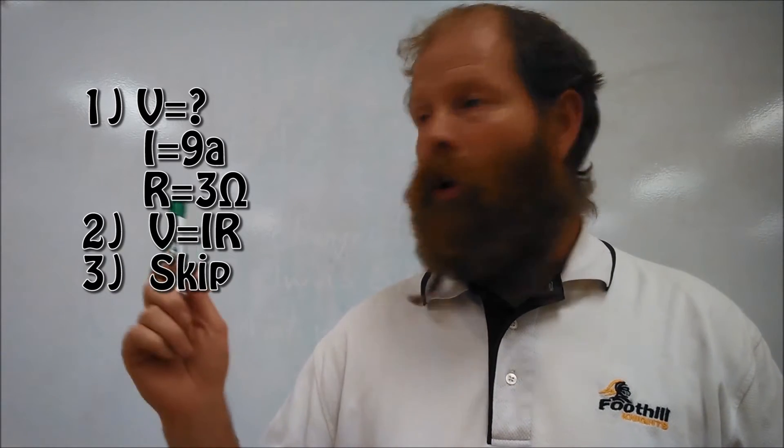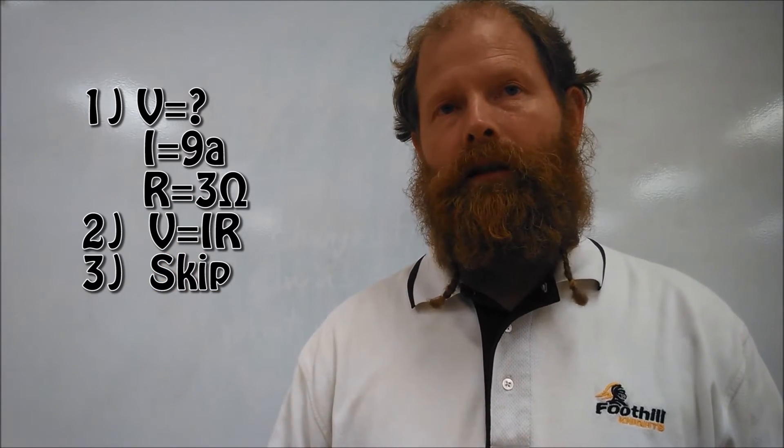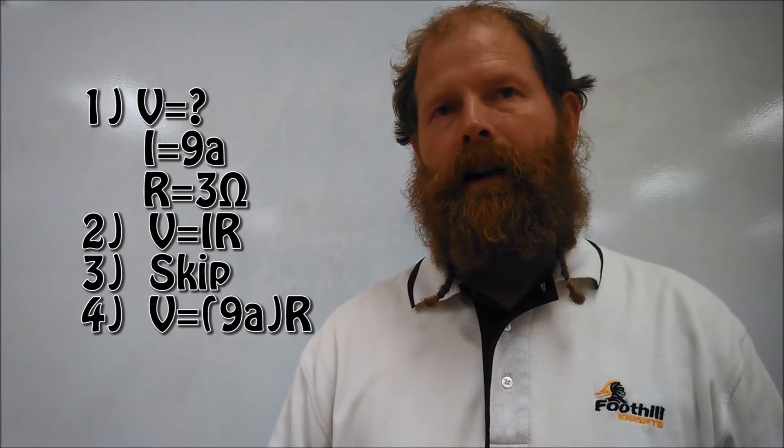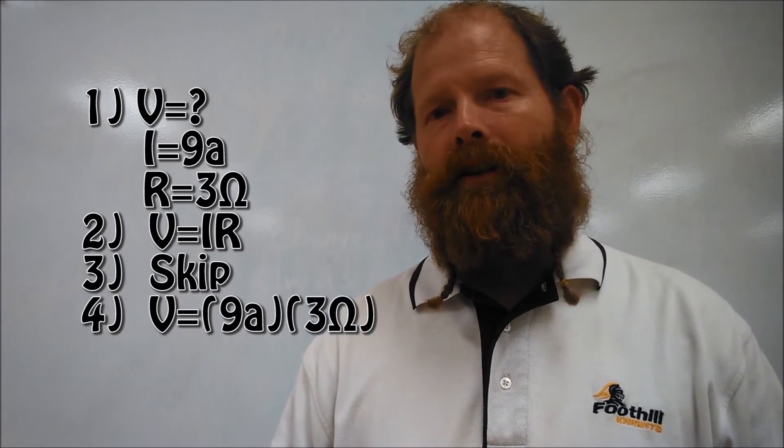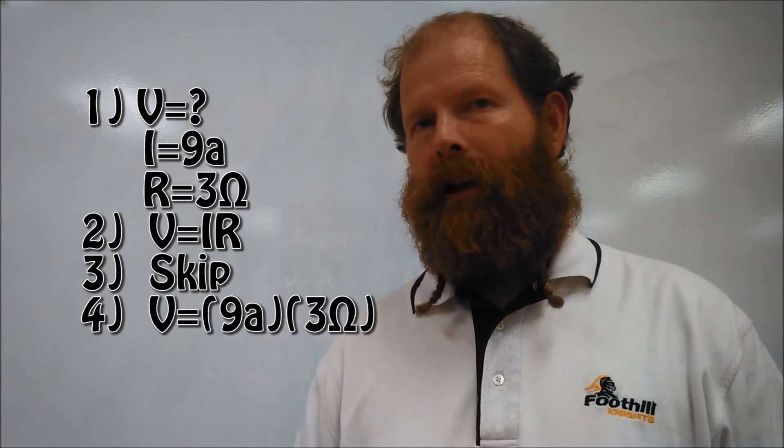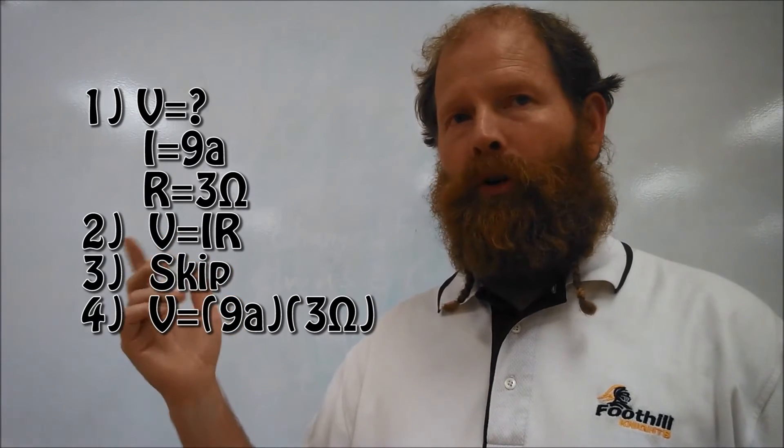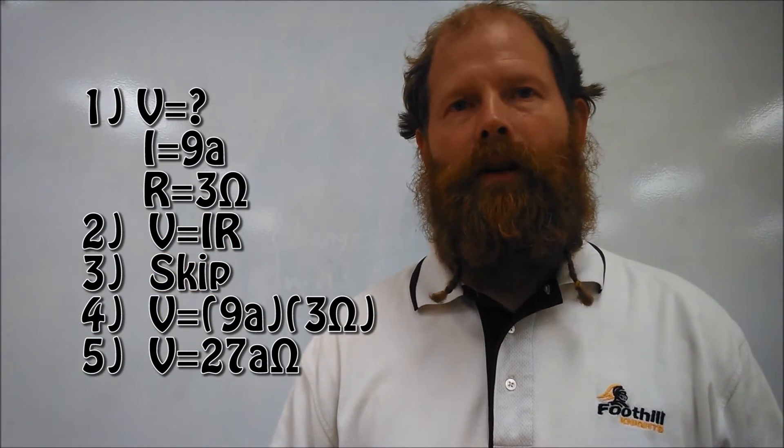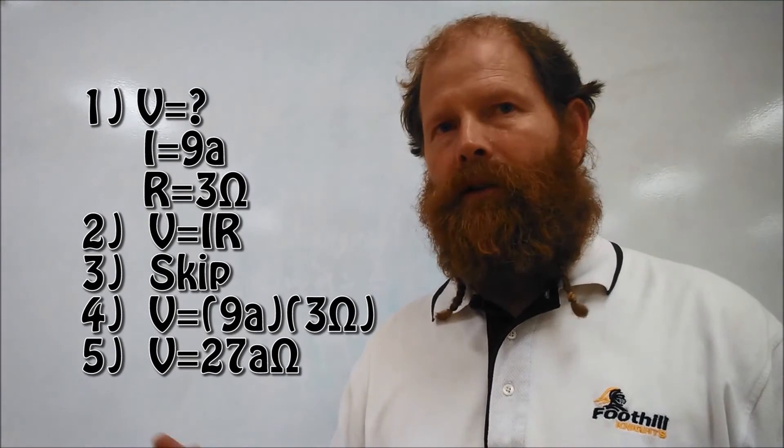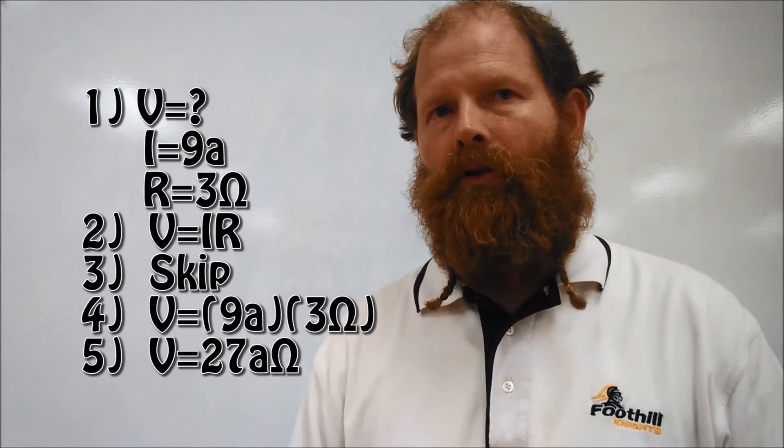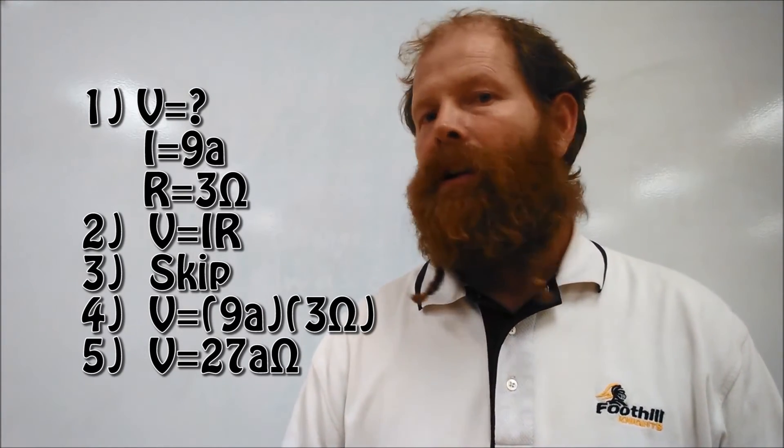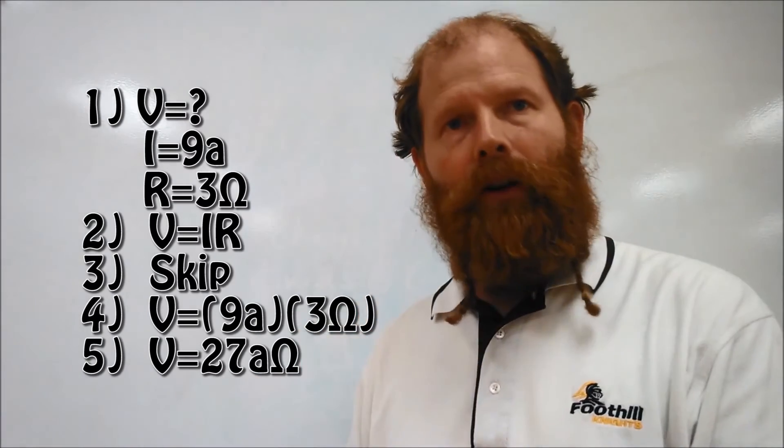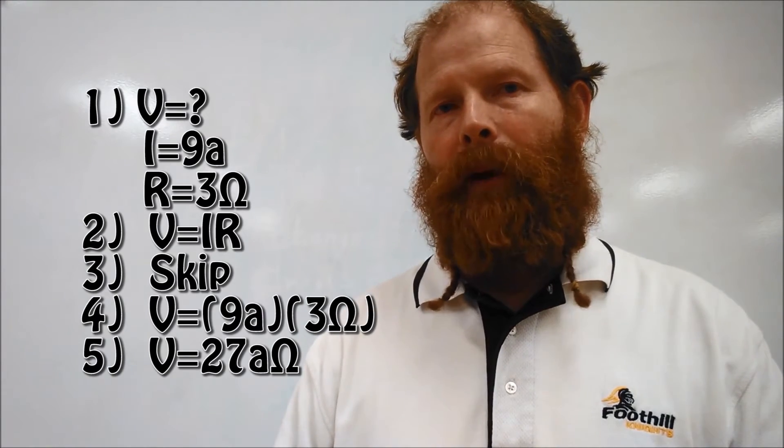Then we're skipping step three because we've already solved for V. And so we can plug in. I is 9A, so we'll plug it in like this. And then R is three horseshoes, so we'll plug it in like this. And then you can see when we multiply those two together, 9 times 3 gives us 27. And our units for now we'll just do A times horseshoes, so 27A horseshoes. Later on we'll learn that that's the same thing as a volt. But for now, this is how we'll do it as we're learning how to plug them in.